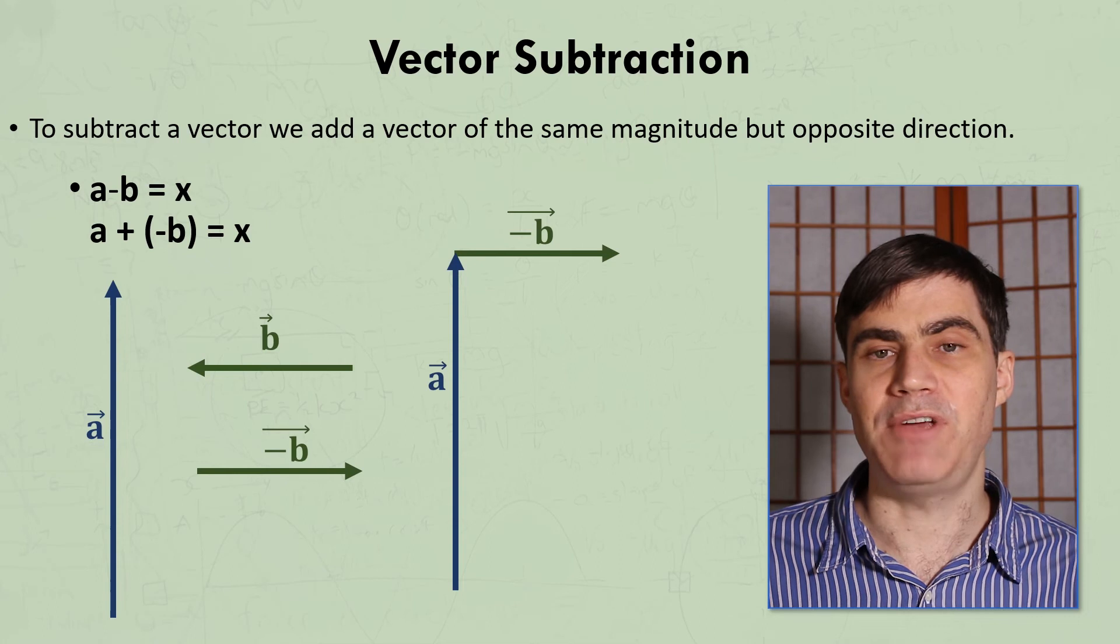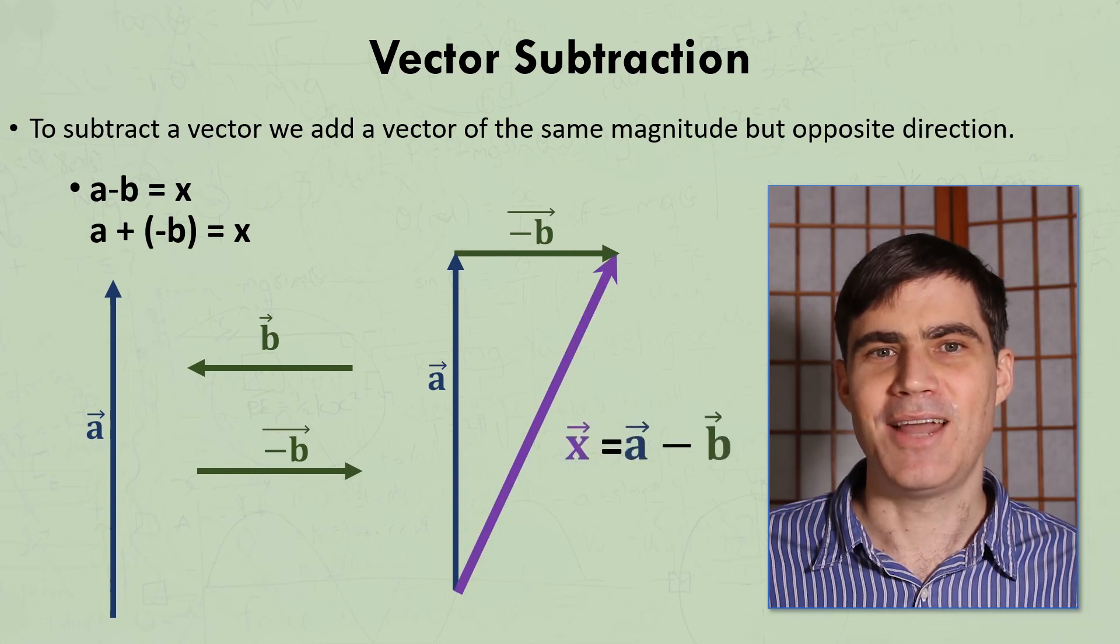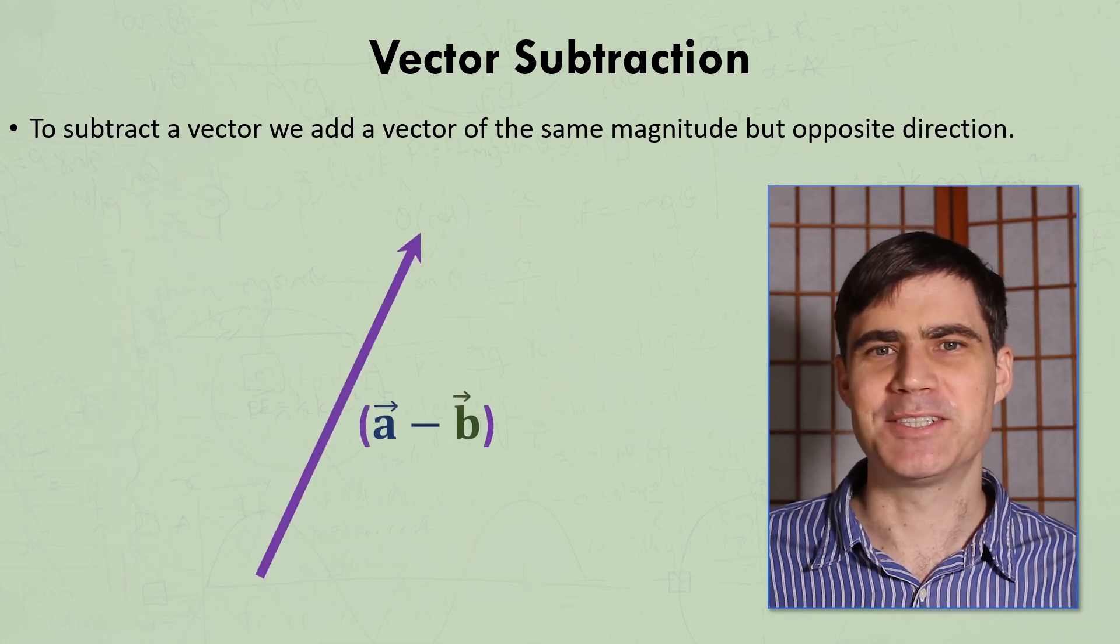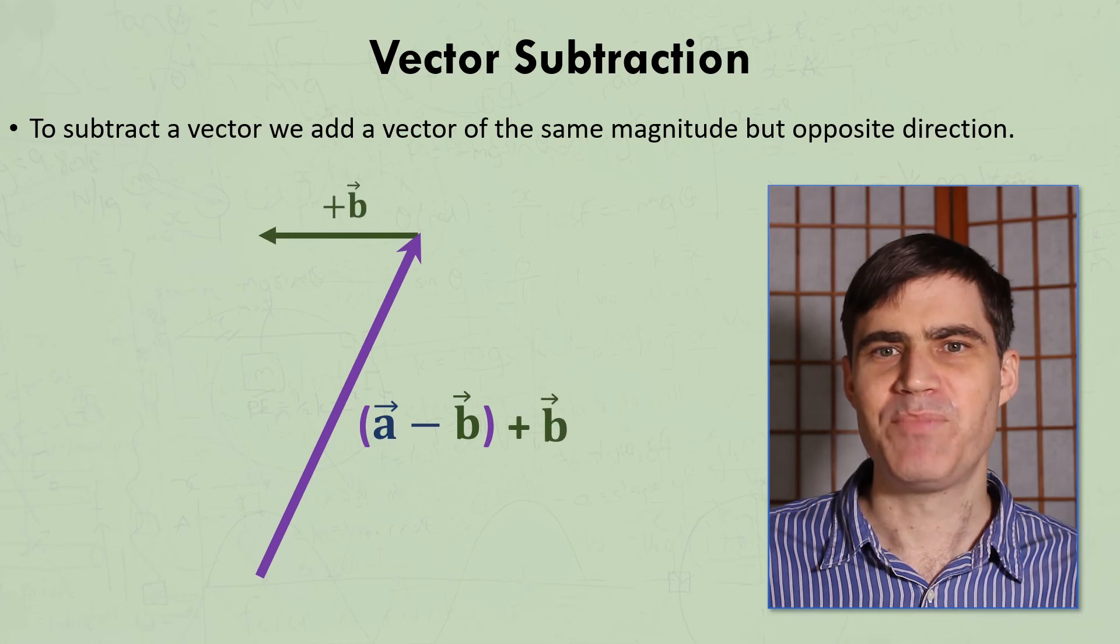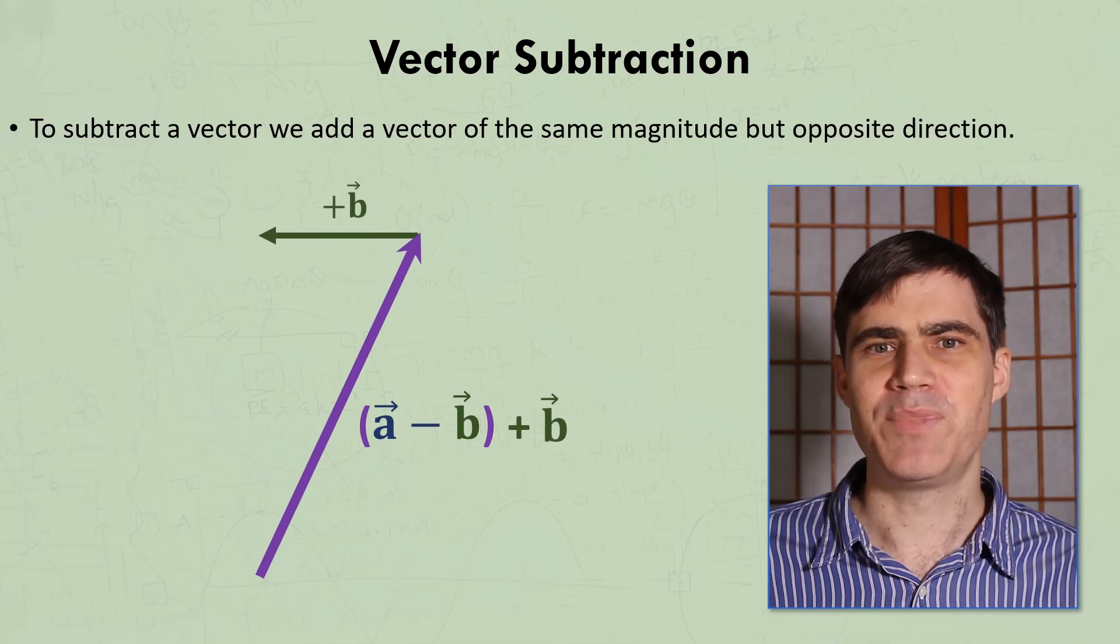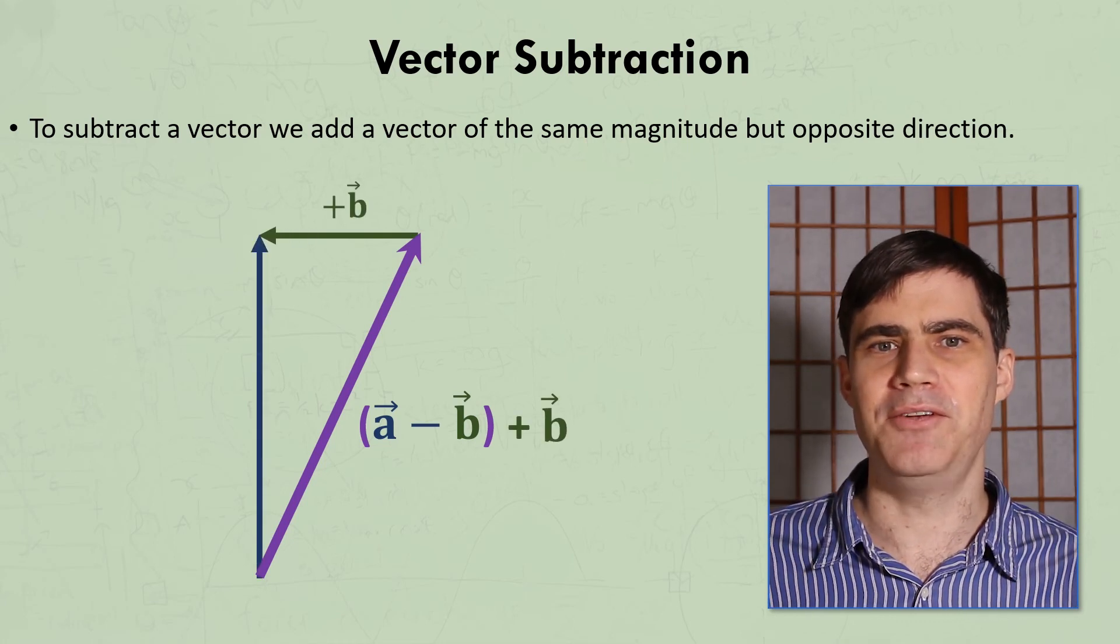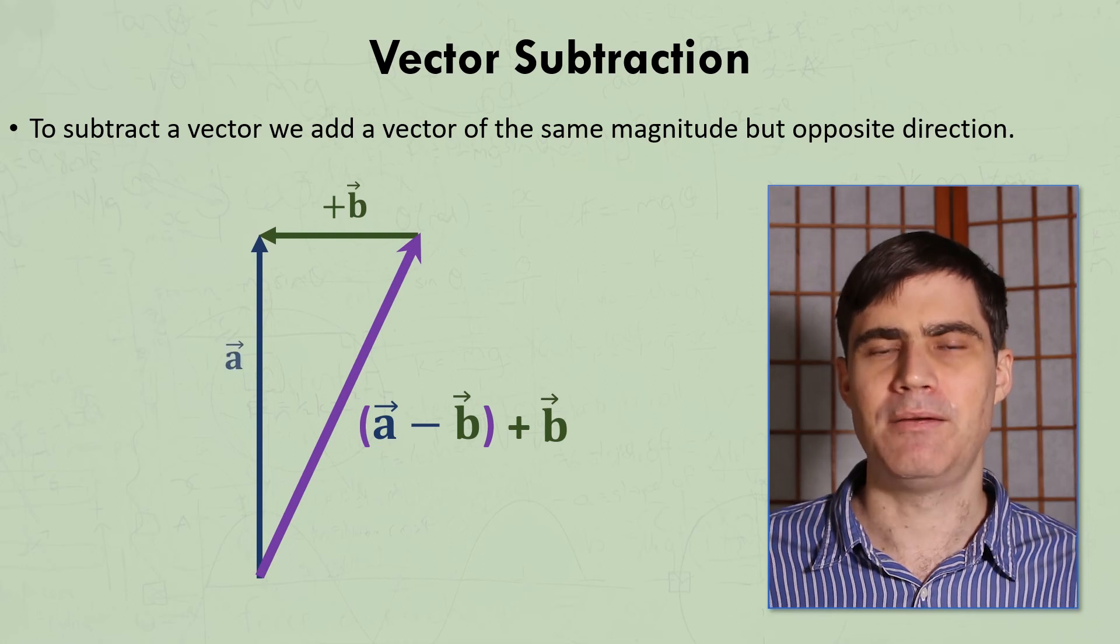Like to prove it, if this is a minus b, and then we add b, then to find the original vector sum, we draw the resultant from the start to the end, and we get the original vector a, as we would expect.